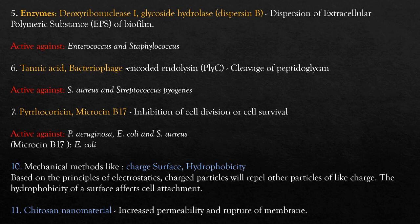The sixth group is Tannic Acid and Bacteriophages. Both have a mechanism involving encoding of endolysin PLYC and cleavage of peptidoglycan. These are active against Staphylococcus and Streptococcus. The seventh is Pyrococcus and Microcin B17, whose mechanism is inhibition of cell division or cell survival; they are active against Pseudomonas, E. coli, and S. aureus.